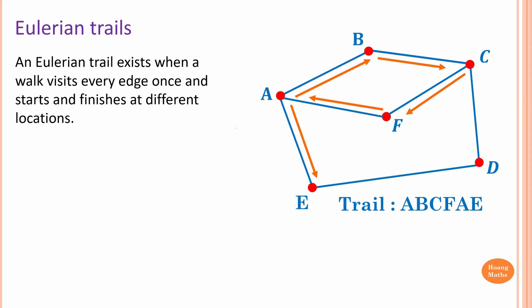For example, this one here. I start at A, I travel to B, and B to C, C to F, F to A, and then I stop at E. Noting that I only pass through these edges once, and then this vertex A here, I repeat it twice. So this is a trail.